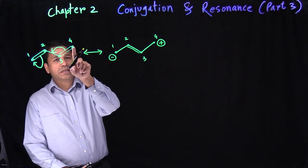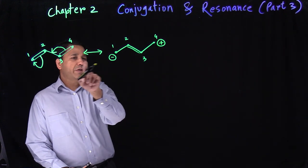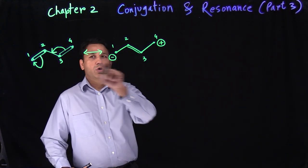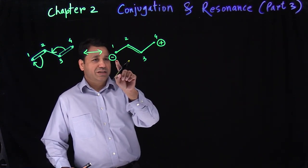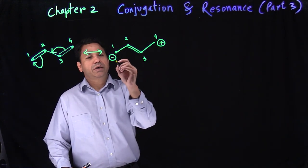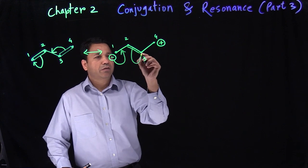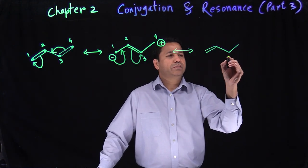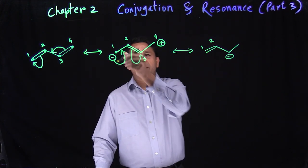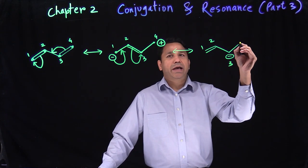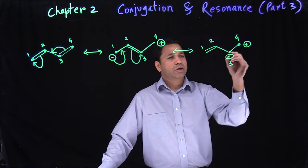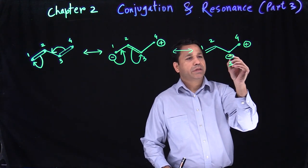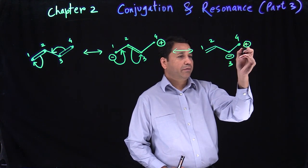We started at carbon four and ended at carbon one, so we have no more room to go further — we have to go back now. The key here is: we have to get back to what we started with. Looking backwards, we have negative, single, double — that's a conjugation. We work on that conjugation. Double becomes negative: carbon one and two will have the double bond, and three will become negative. Carbon four is still positive.